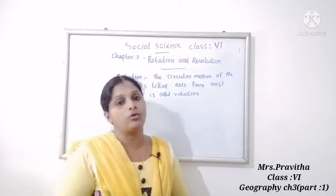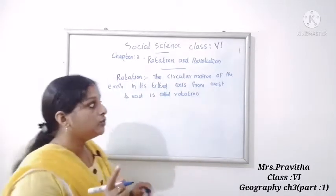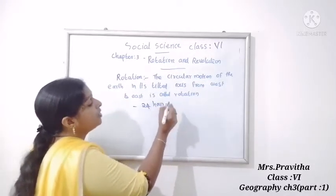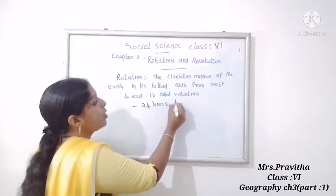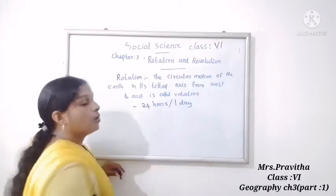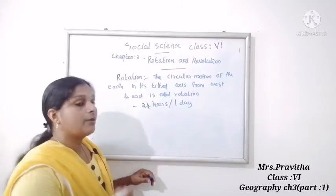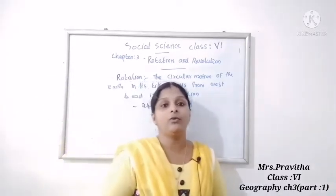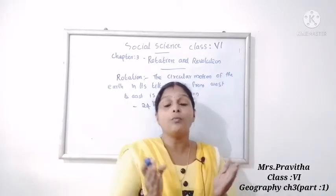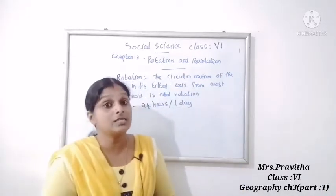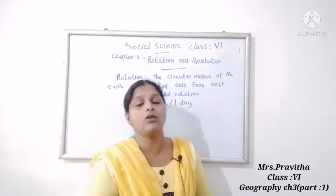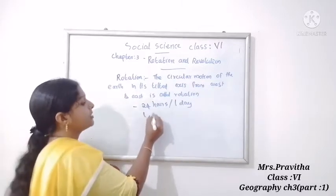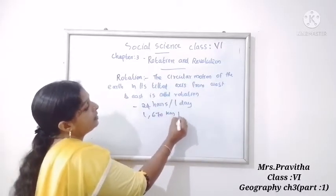For completing one rotation, earth will take 24 hours or one day. Earth spins like a top at a speed of 1670 kilometers per hour.